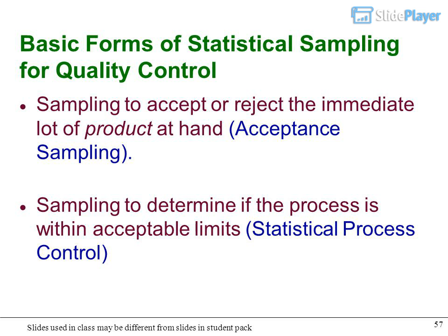Basic forms of statistical sampling for quality control: Sampling to accept or reject the immediate lot of product at hand is acceptance sampling. Sampling to determine if the process is within acceptable limits is statistical process control.